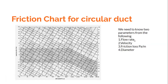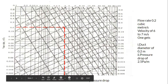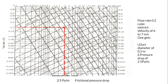If you know any two of the parameters — for example, the flow rate and velocity, or the flow rate and friction loss — you can determine the other two. I am showing this on another chart where I have rotated it, keeping flow rate on the y-axis and friction loss on the x-axis. I've taken an example to help you understand how to use the friction chart.